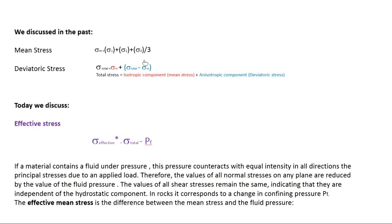Today we are going to learn about effective stress. Effective stress is equal to total stress minus pore pressure. The total stress can be sigma 1, sigma 2, or sigma 3, so effective stress is sigma 1 minus pore pressure, or effective sigma 2 equals sigma 2 minus pore pressure.